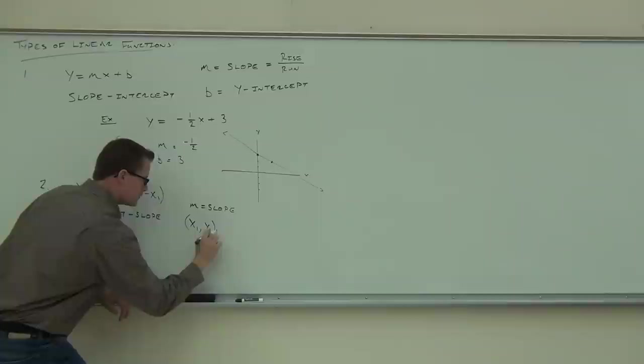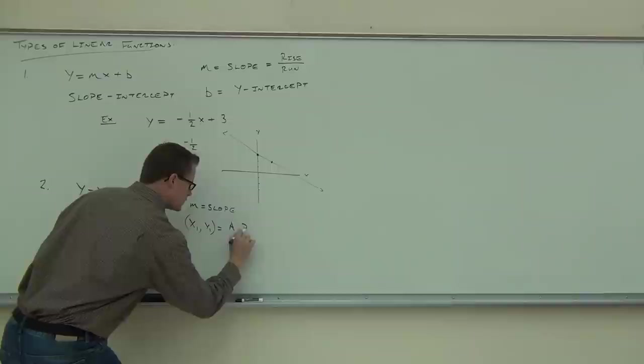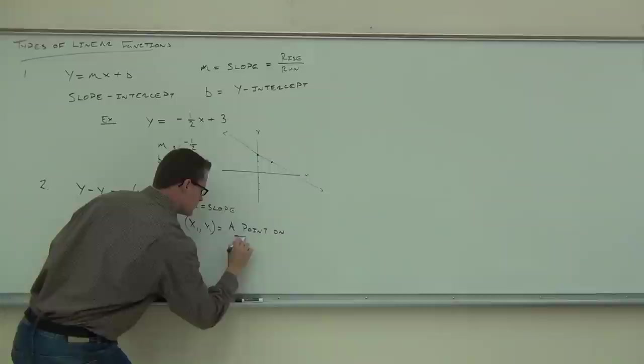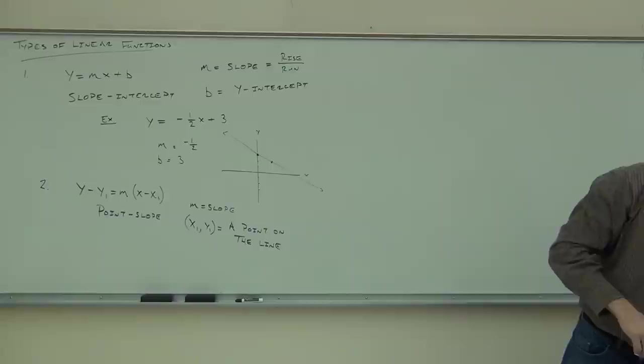M is still your slope, which is rise over run. And x1 comma y1 is a specific point — some specific point on the line.